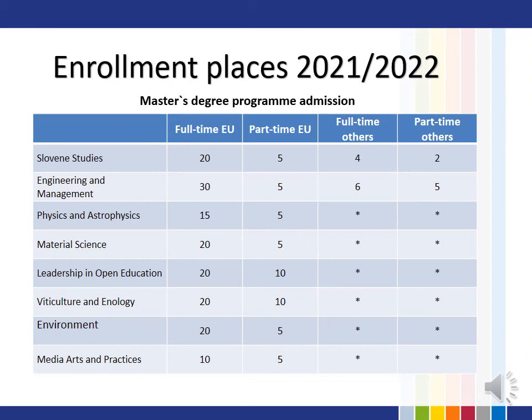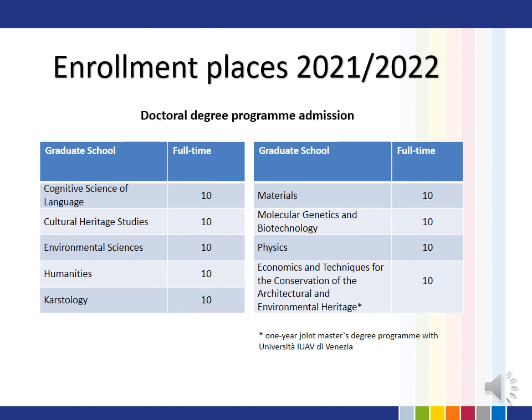Candidates who have completed a first-level study program in the relevant field can enroll in the second-level master study programs. The Media Arts and Practice program also requires a positive assessment of artistic ability. Candidates who have completed a second-level study program may enroll in the third-level doctoral study programs. The conditions for enrollment are detailed on the website of the University of Novogorica.